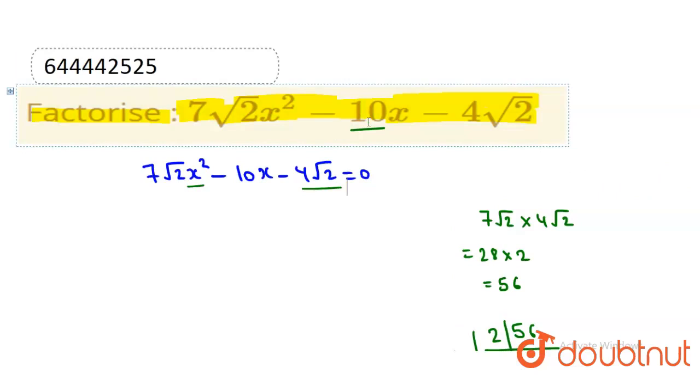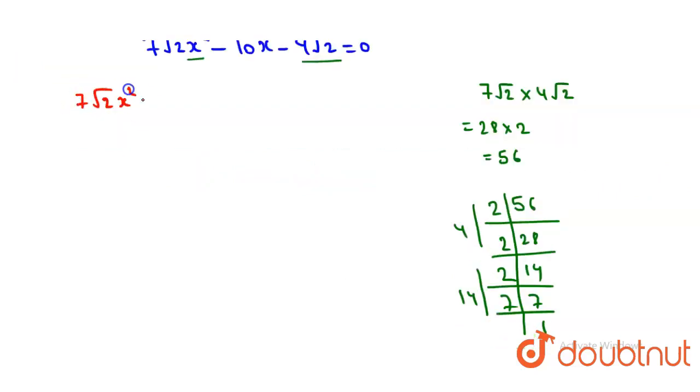Now in the next step we can write 7√2x² - 10x. At the place of 10x we can write 14x - 4x, so this becomes 7√2x² - 14x + 4x - 4√2 = 0.